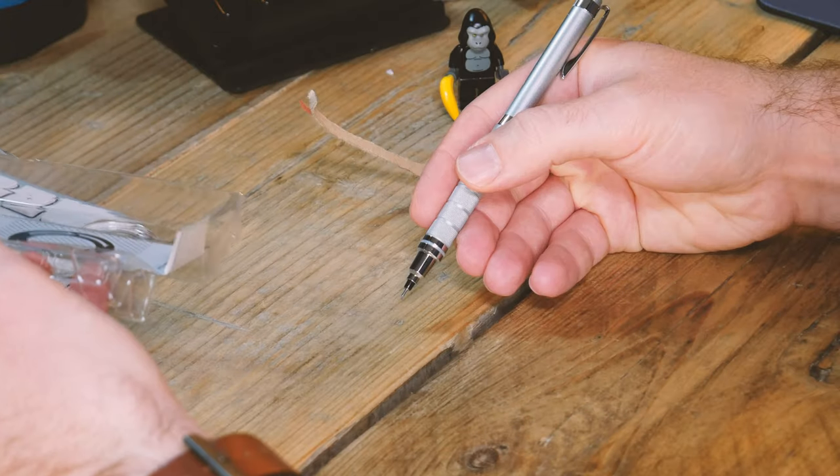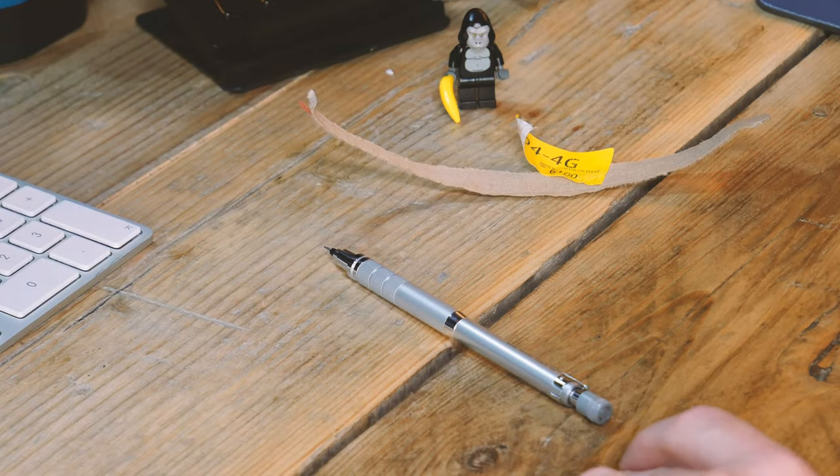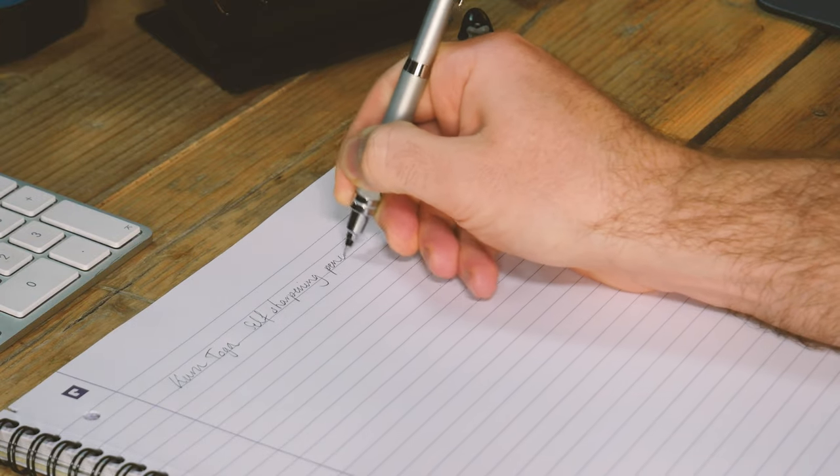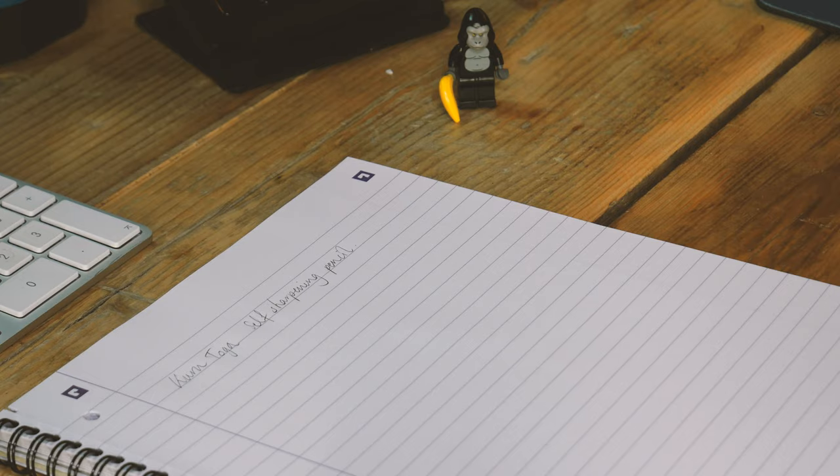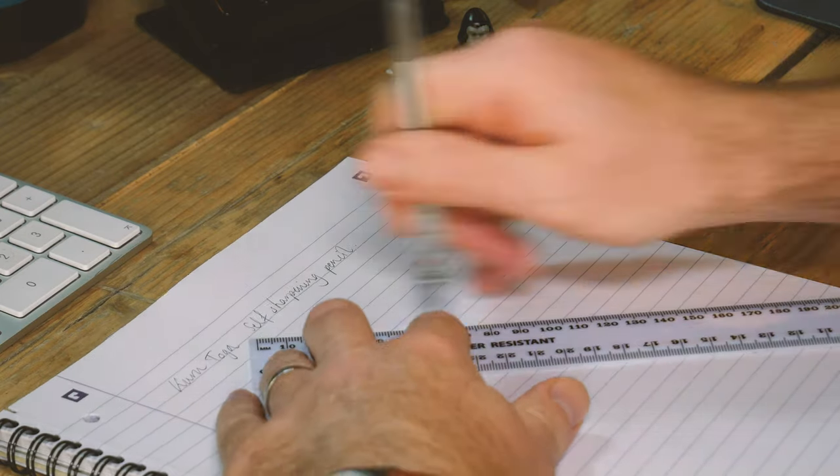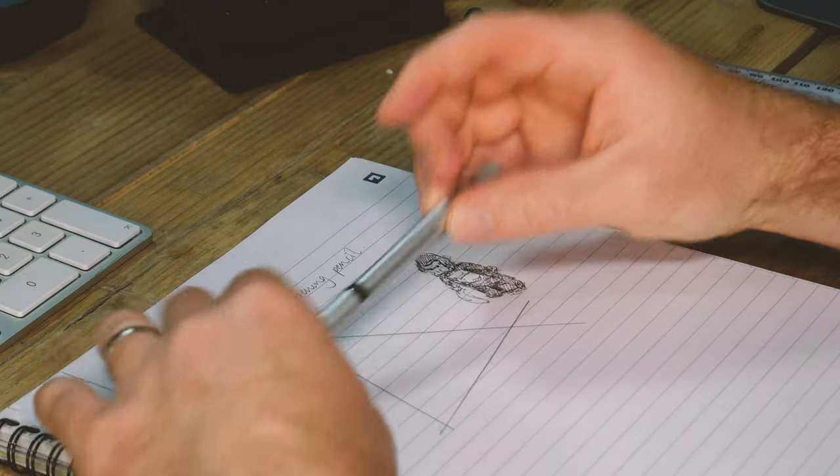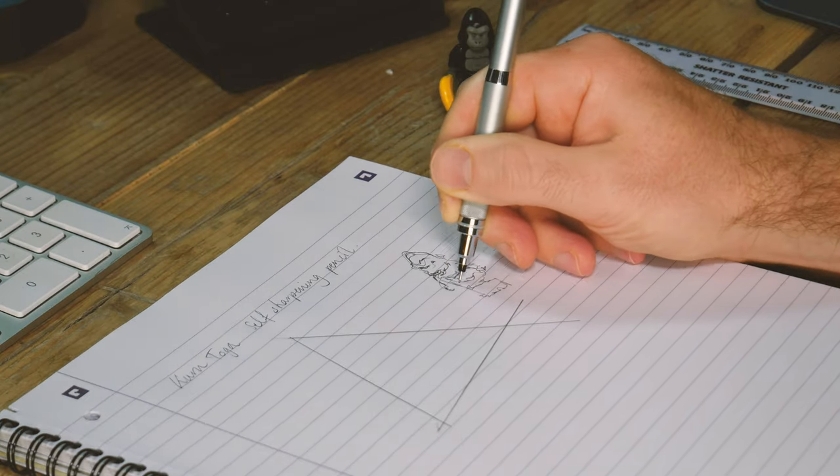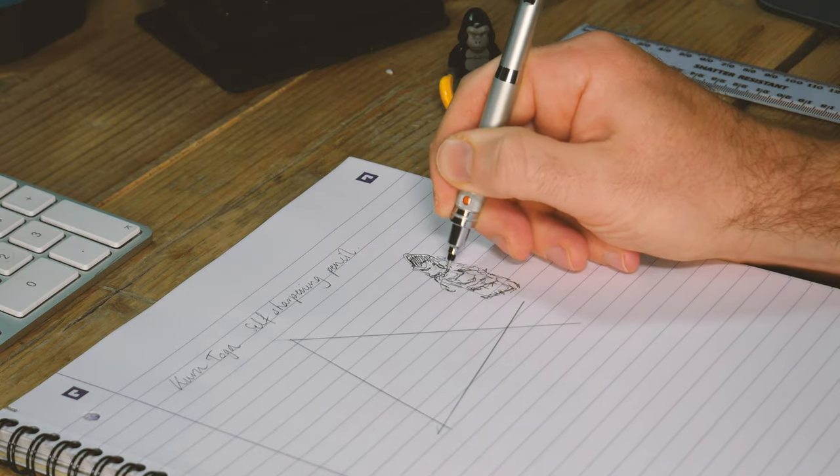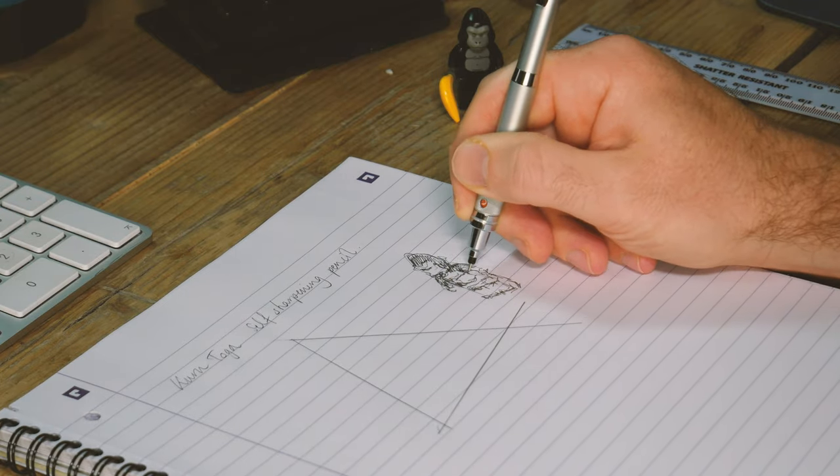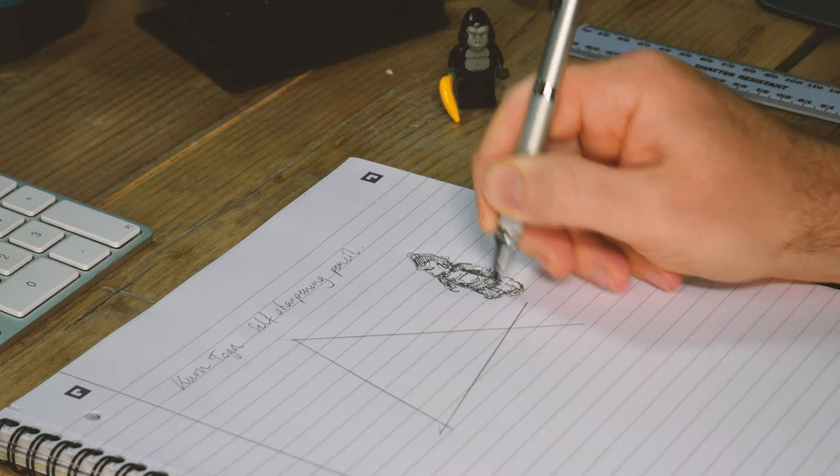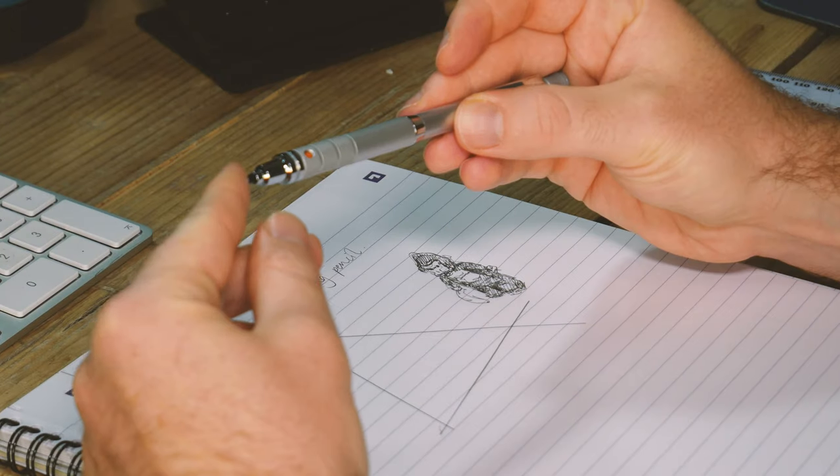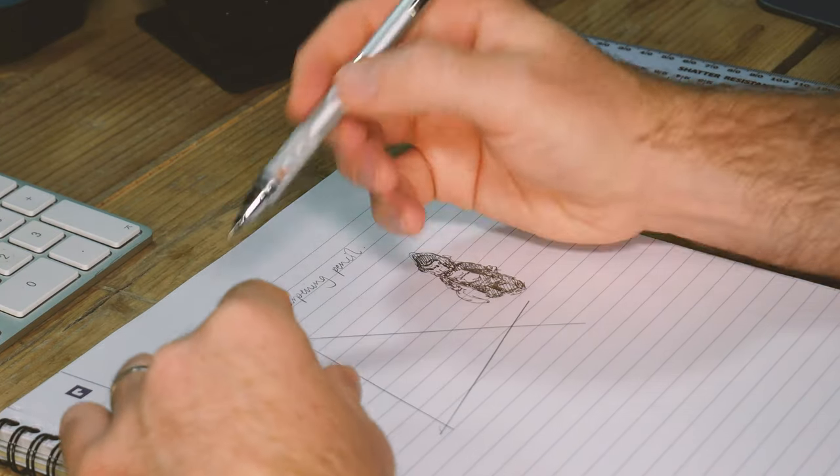Actually, Uniball does a whole range of these Kuri Toga pencils, and being a bit of a stationary geek, I thought I'd try out this one. It's the Roulette. It comes in gunmetal or this nice brushed aluminium look. And specific to the Roulette is that nice textured grip. So if you're the type of person that likes to look after your stationary and enjoys really nice stationary, I'd definitely recommend this upgrade from the plastic version. It's the same mechanism inside, but it's got that slightly nicer build and quality of finish.